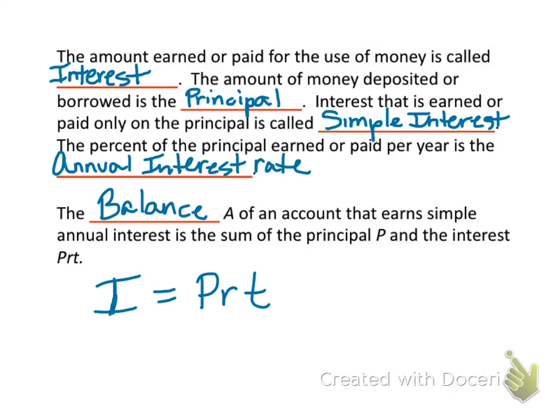Whenever you borrow or save money, you earn interest or you pay interest. So if you're taking out a loan to buy a car, there's going to be interest for borrowing that money. If you deposit money into a savings account, the bank will pay you interest based on the amount of time you have the money deposited and the principal balance. We always earn or pay interest, and you're going to learn today how that's actually calculated in a simple interest situation.